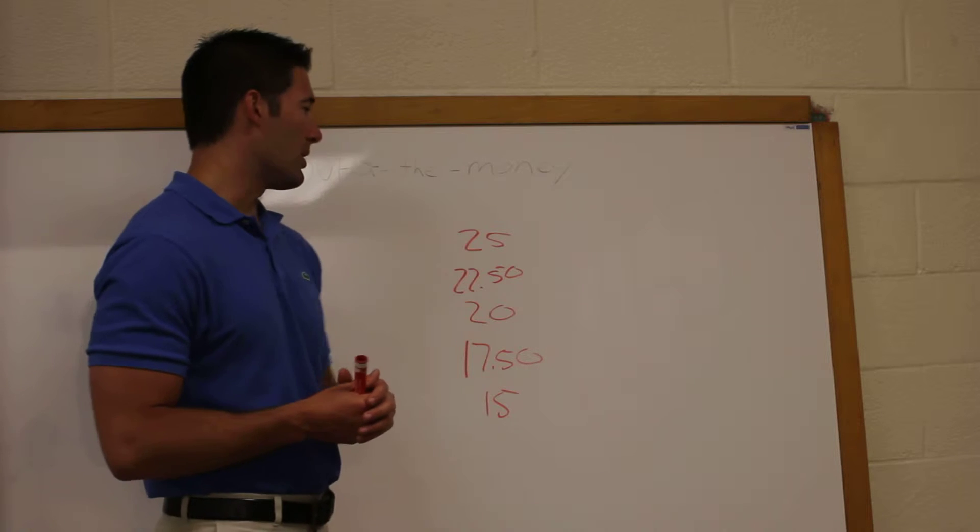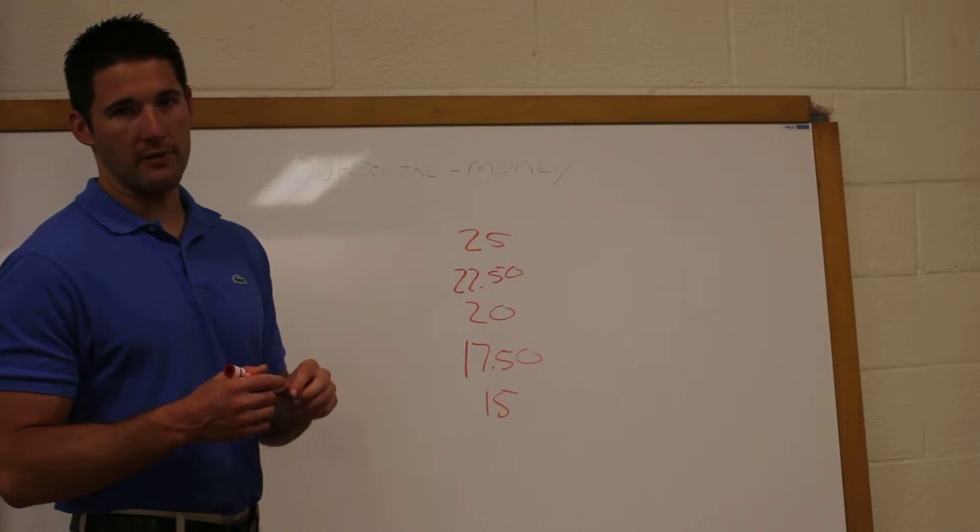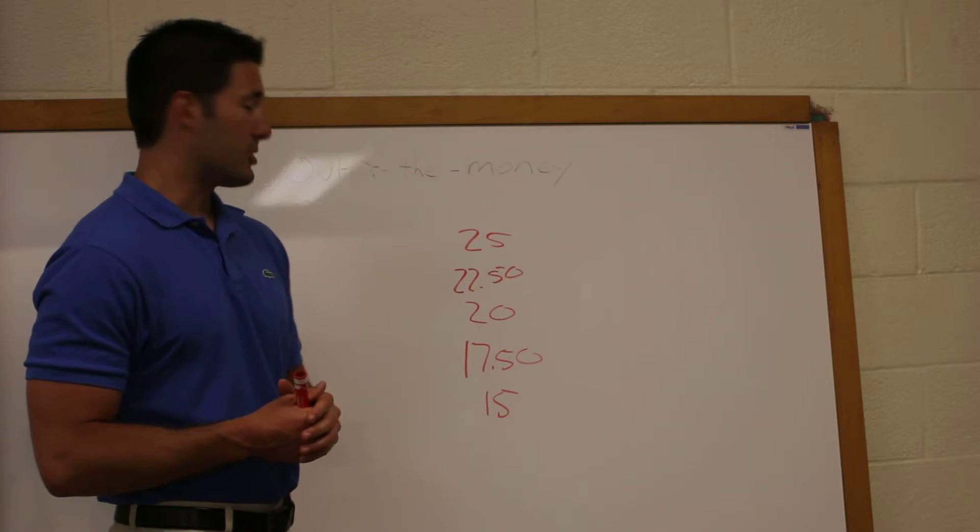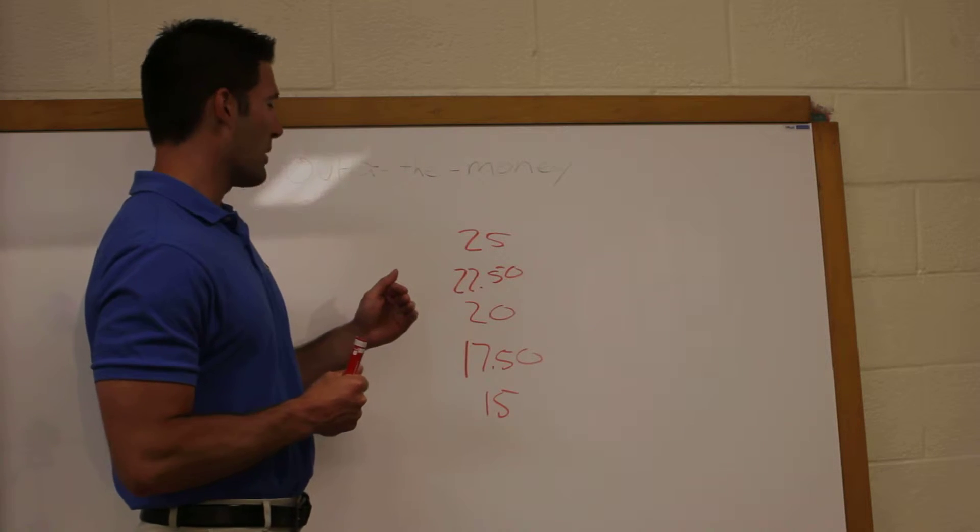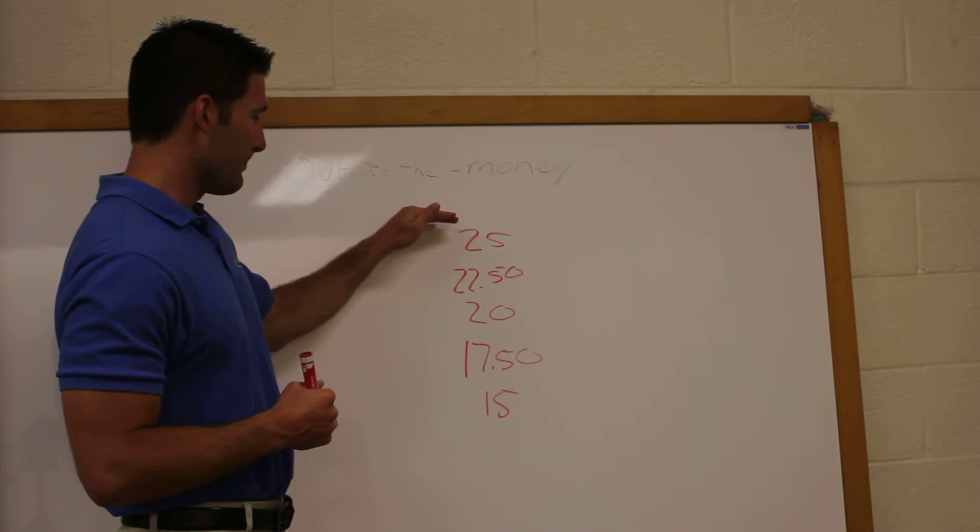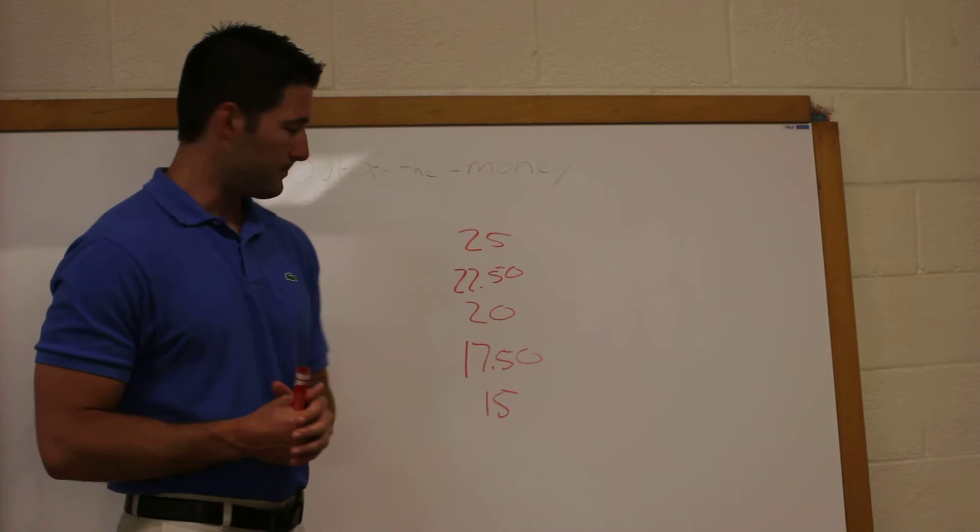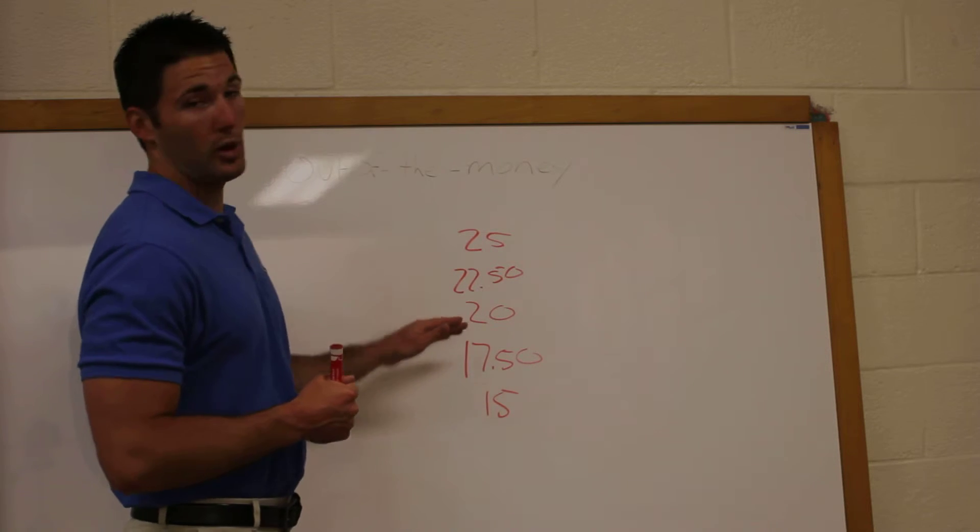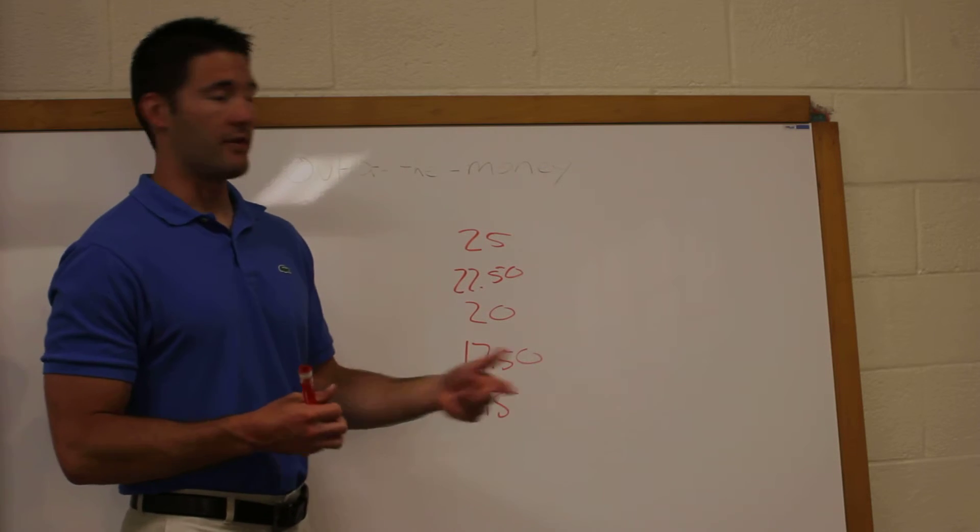So for example, if a stock's current market value is $20 a share, for a call option, all the strike prices above 20 would be out of the money. For a put option, all option strike prices below 20 would be out of the money.